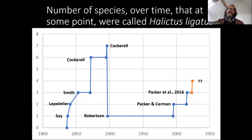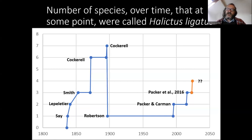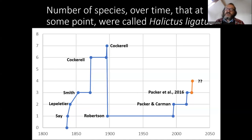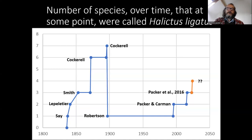Indeed, my PhD thesis, which was entitled 'Geographic Variation in the Social Organization of Halictus ligatus,' was completely wrong. It should have been 'Variation among species in the Halictus ligatus species complex.' But we didn't discover that until relatively recently.